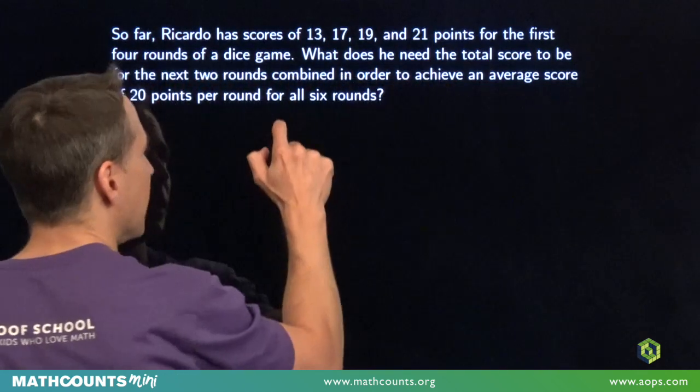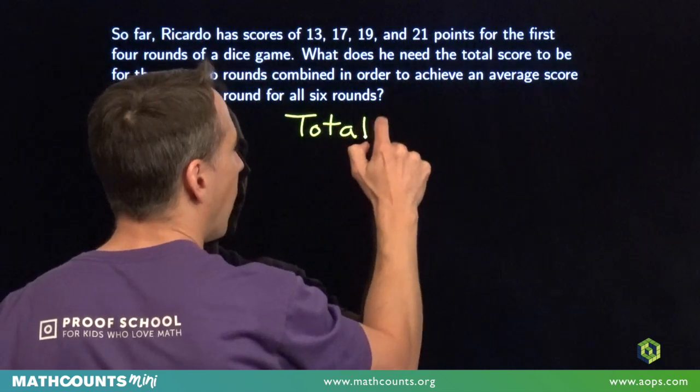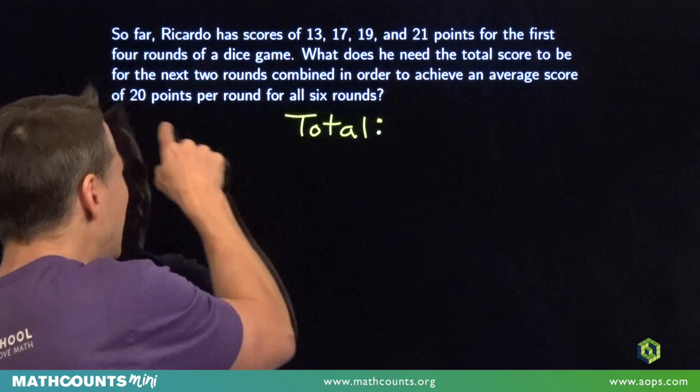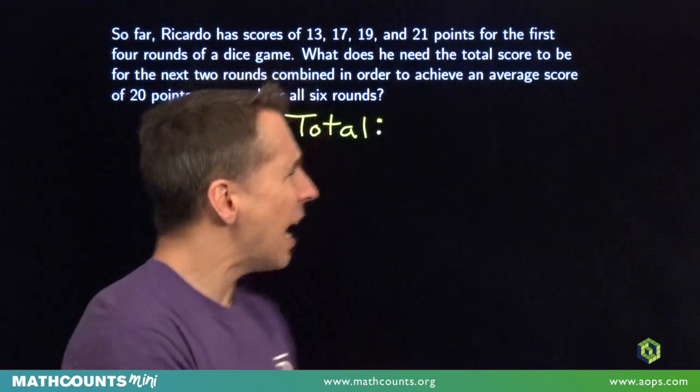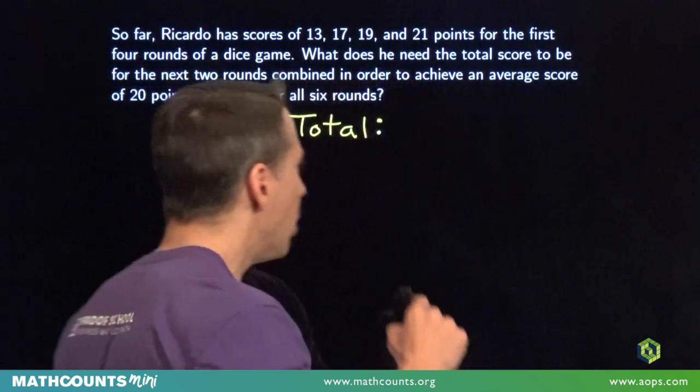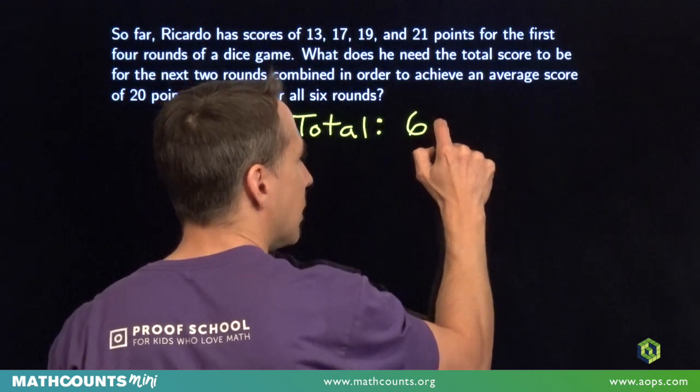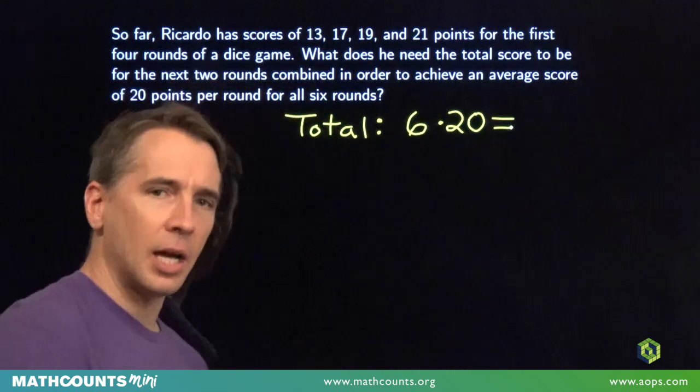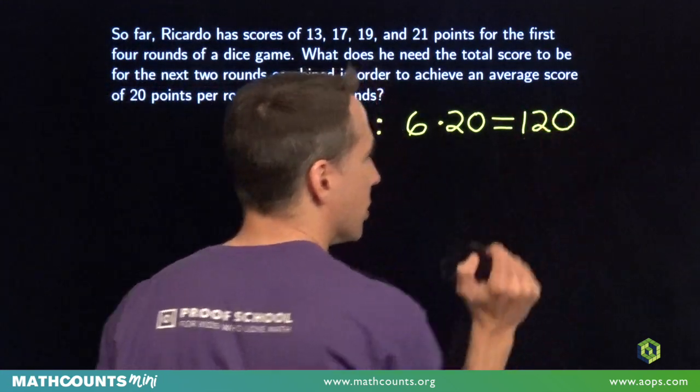Now, our first strategy, we're going to think about what the total score is over all six rounds. Now, for these six rounds, we need the average to be 20 points per round. So if the average is 20 for these six rounds, when we add up all the scores, we have to get a total sum of those six rounds times that average score of 20 points per round. 6 times 20, the total of all six rounds has to be 120.